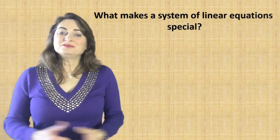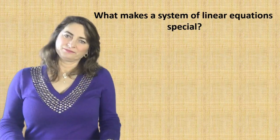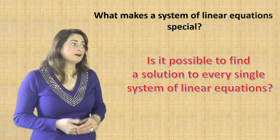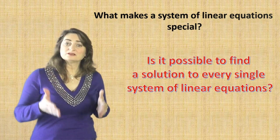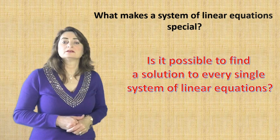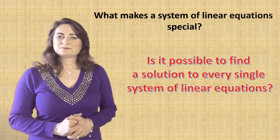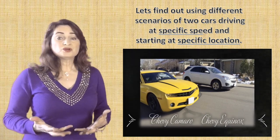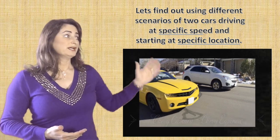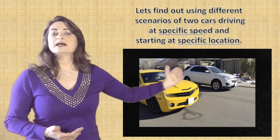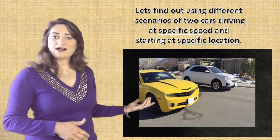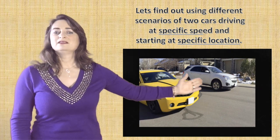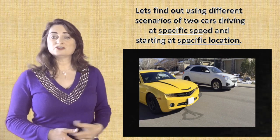So what makes a system of linear equations special? Think about this: is it possible to find a solution to every single system of linear equations? Let's find out using different scenarios of two cars driving on the street at specific speeds and starting at specific locations. You have the Chevy Camaro, the yellow car, and the Chevy Equinox, the white car, driving on the street.